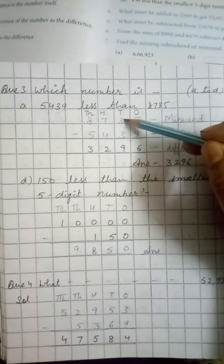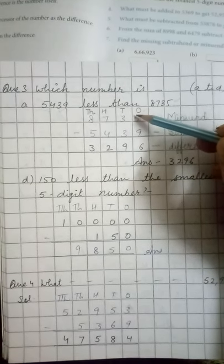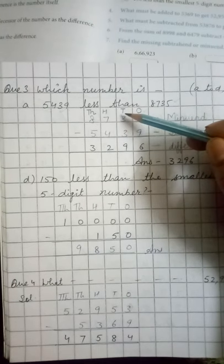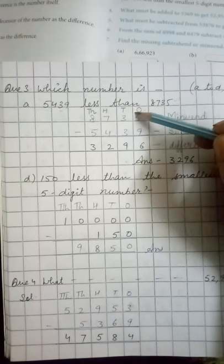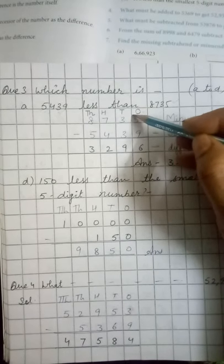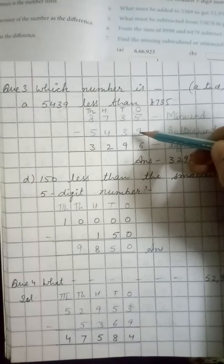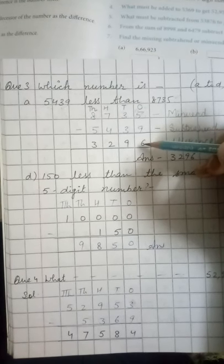So we need to carry from the tens position. We will borrow from the next number. Then it will become 15. 15 minus 9 will be 6.